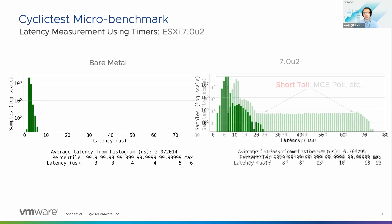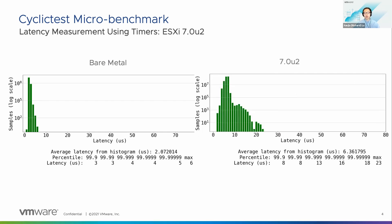In U2, we were able to get rid of both the thick tail and the long tail. This is the graph we have for U2 — as you can see, we have a much flatter tail response, but we didn't stop there.